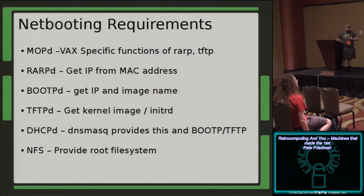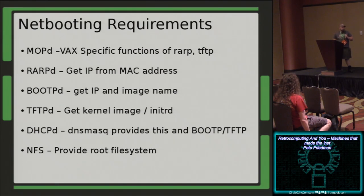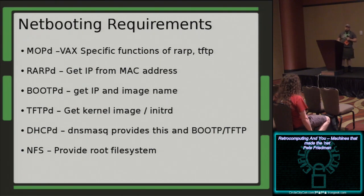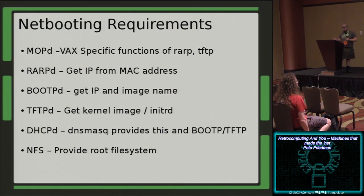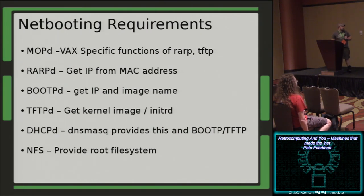What do you need to netboot? If you're running a VAX, there's a management protocol called MOP - that's Digital Equipment Corporation specific - and there's MOPD on NetBSD. You give it a kernel image to load and it goes ahead and does it. It basically combines reverse address resolution as well as TFTP in one package. Otherwise you'll need some way for the machine to get an IP address, usually done with RARP or bootP. DNSmasq is actually a really useful utility - it combines a dynamic DNS server, DHCP server, bootP, and TFTP in one nice package. It's available on Linux as well as NetBSD. And obviously you need NFS to provide the file system.